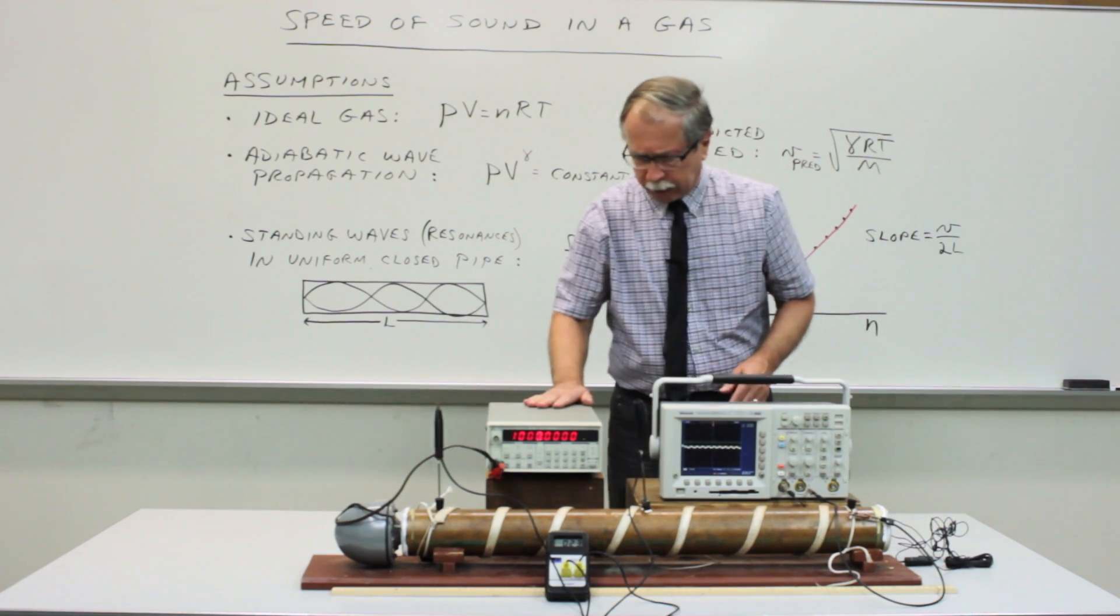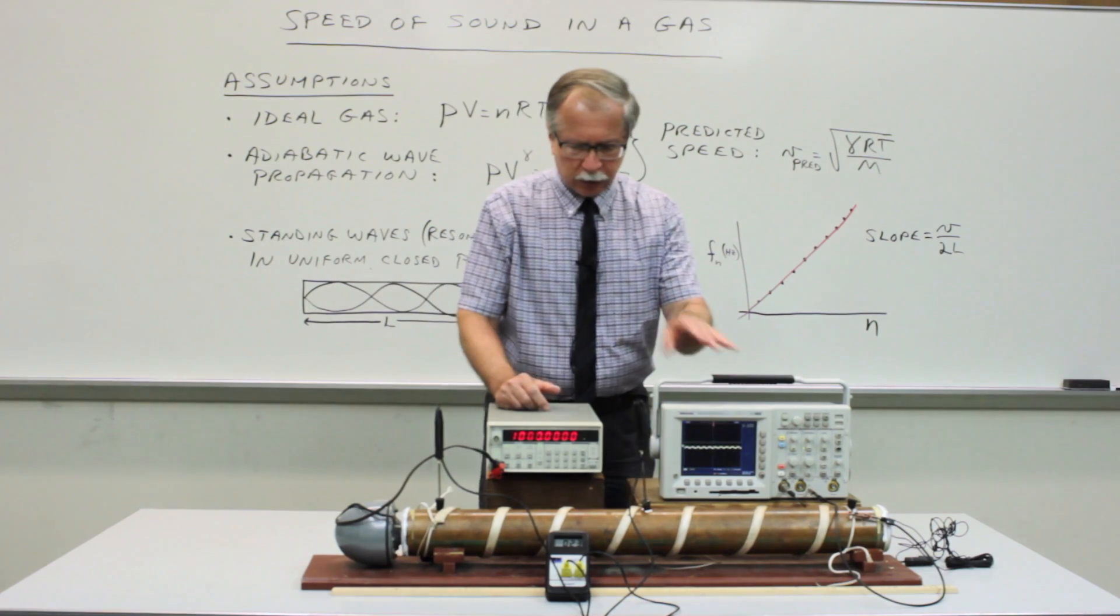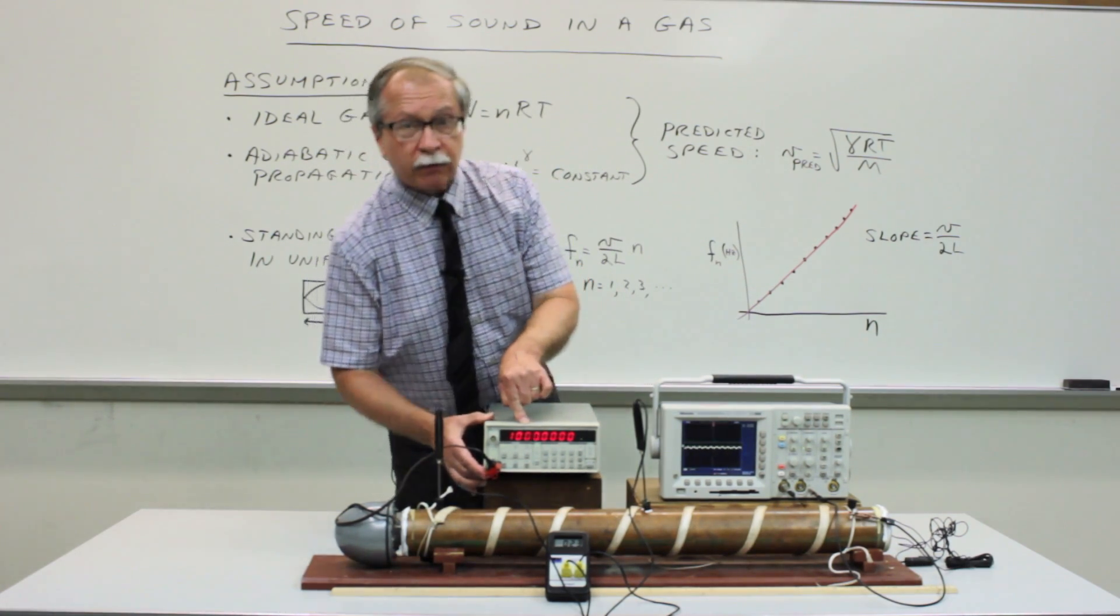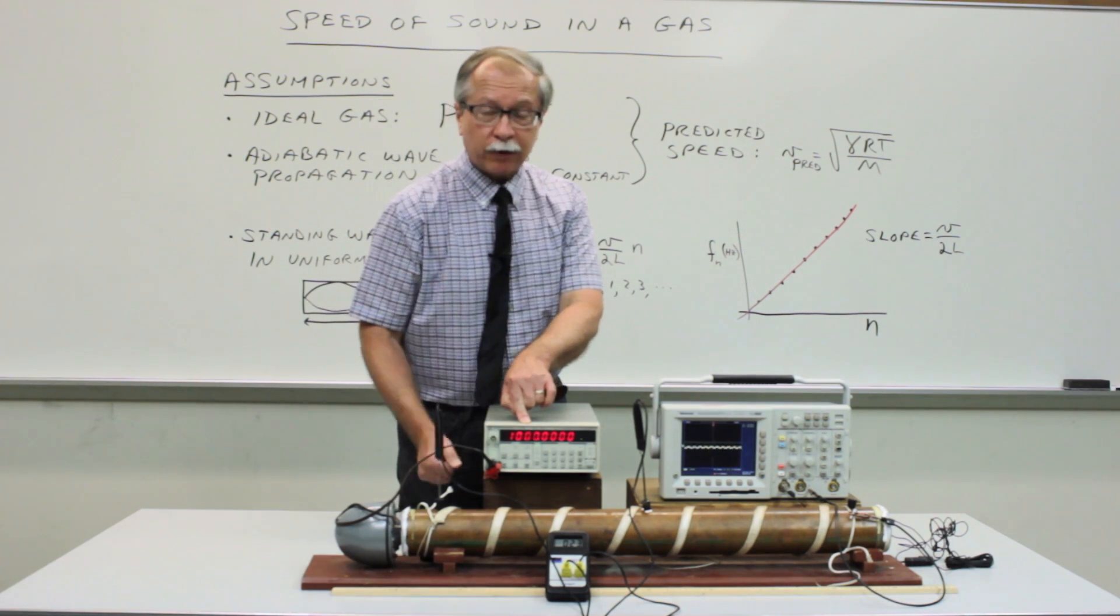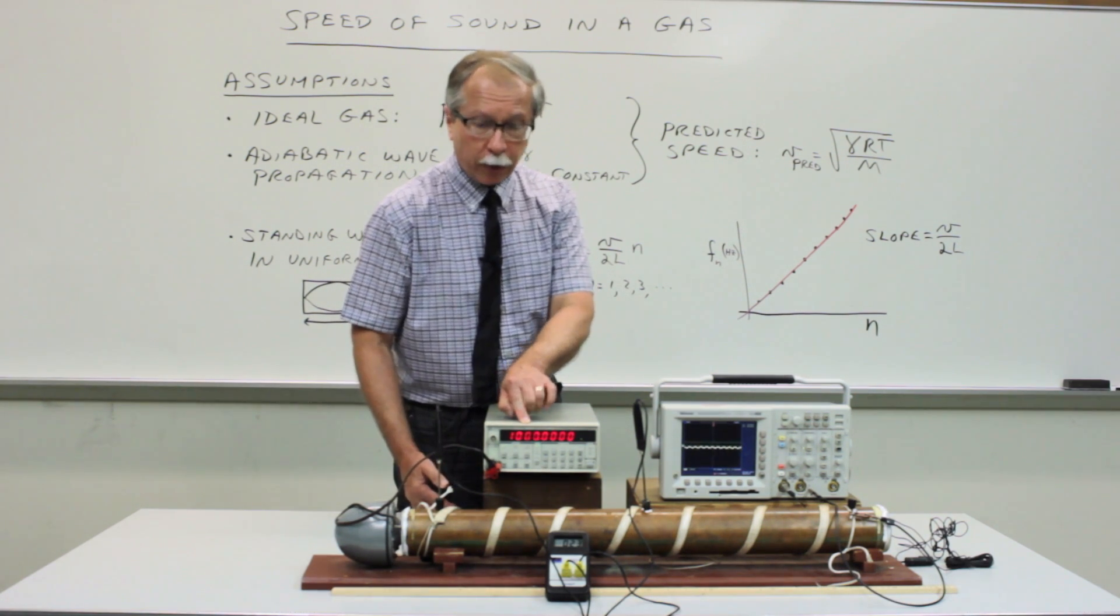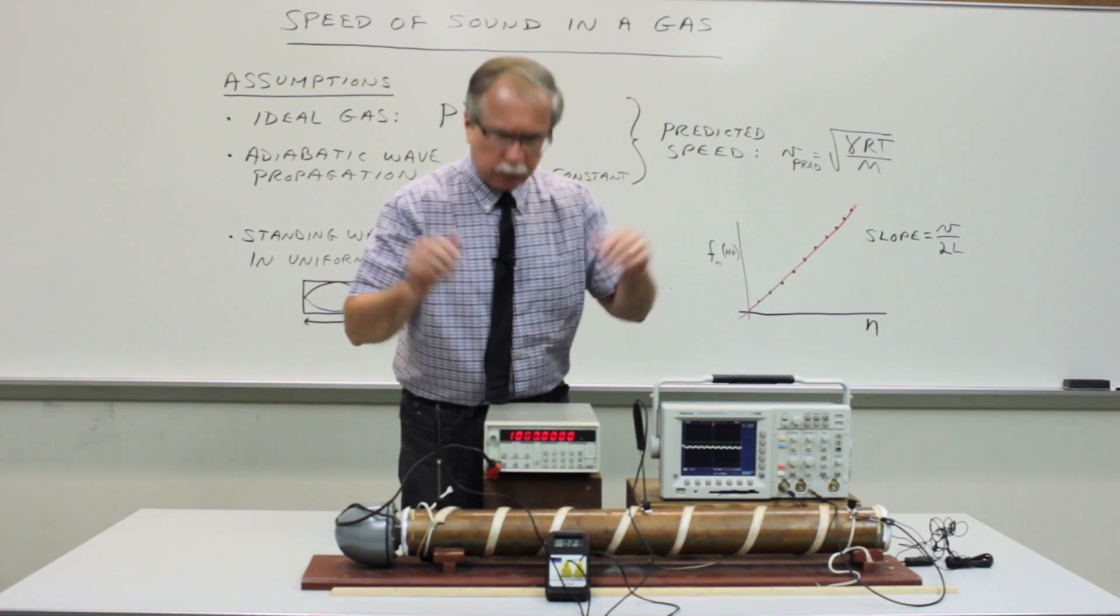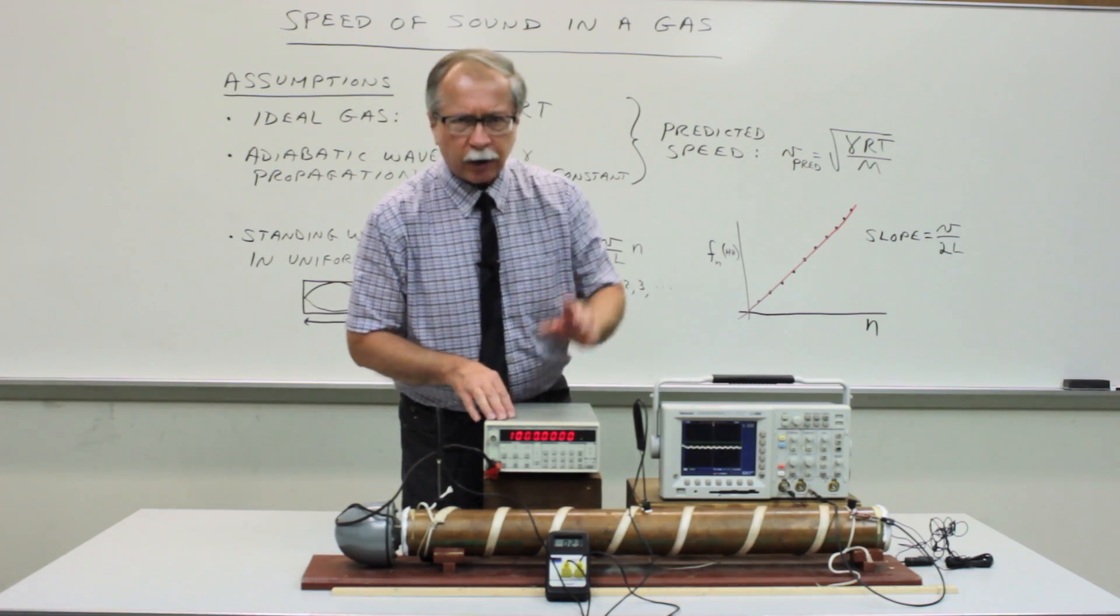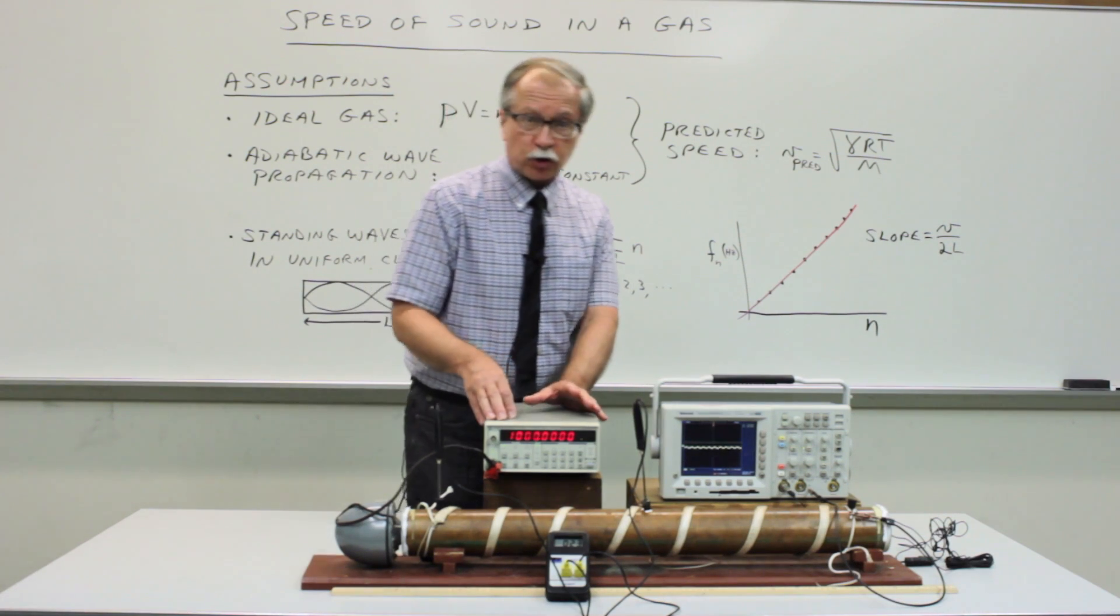So now what we observe is a rather smallish looking wave on the oscilloscope screen. And what we'd like to do is to find a resonance. So we want to change the frequency. This function generator happened to have come on at a frequency of 1000 hertz, which is comfortably within the audio range. But this may or may not be an actual resonance or a standing wave.